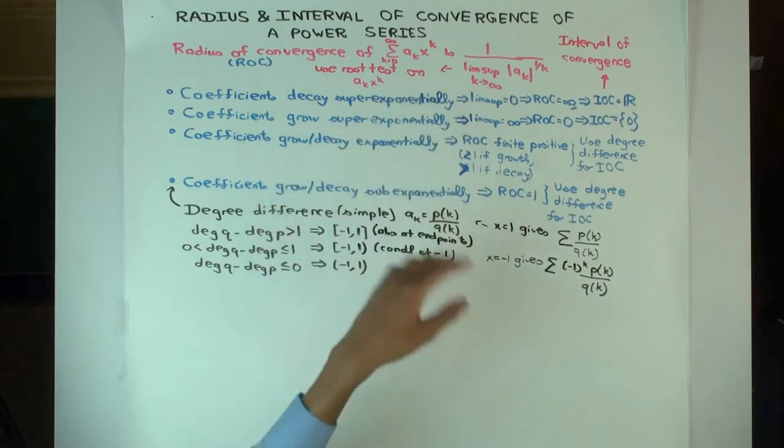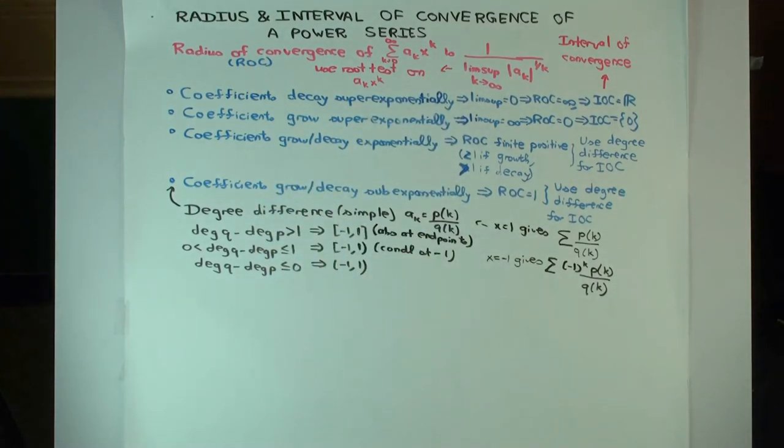And we have to figure out the interval of convergence. Now if the coefficients grow or decay sub-exponentially, then what's the radius of convergence? One. One. Okay, now we have to use the degree difference test to figure out in general what the interval of convergence is, that is what's happening at minus one and what's happening at one.